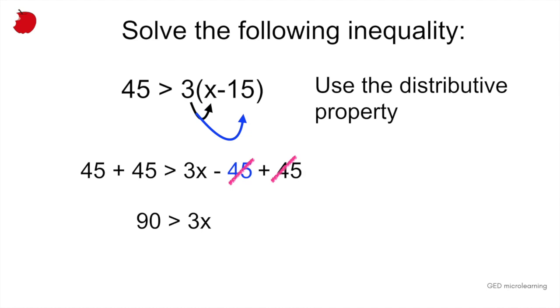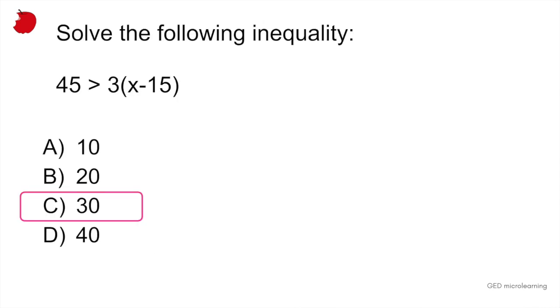So remember that you have to do both things, the same thing on both sides. So we divide by 3 on both sides, and that would give us 30 is greater than x, which is option C.